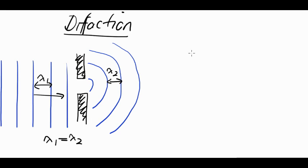So what happens if we make the gap bigger? Well, if we make the gap bigger and we keep the wavelength the same, the only difference is that the waves will diffract less.